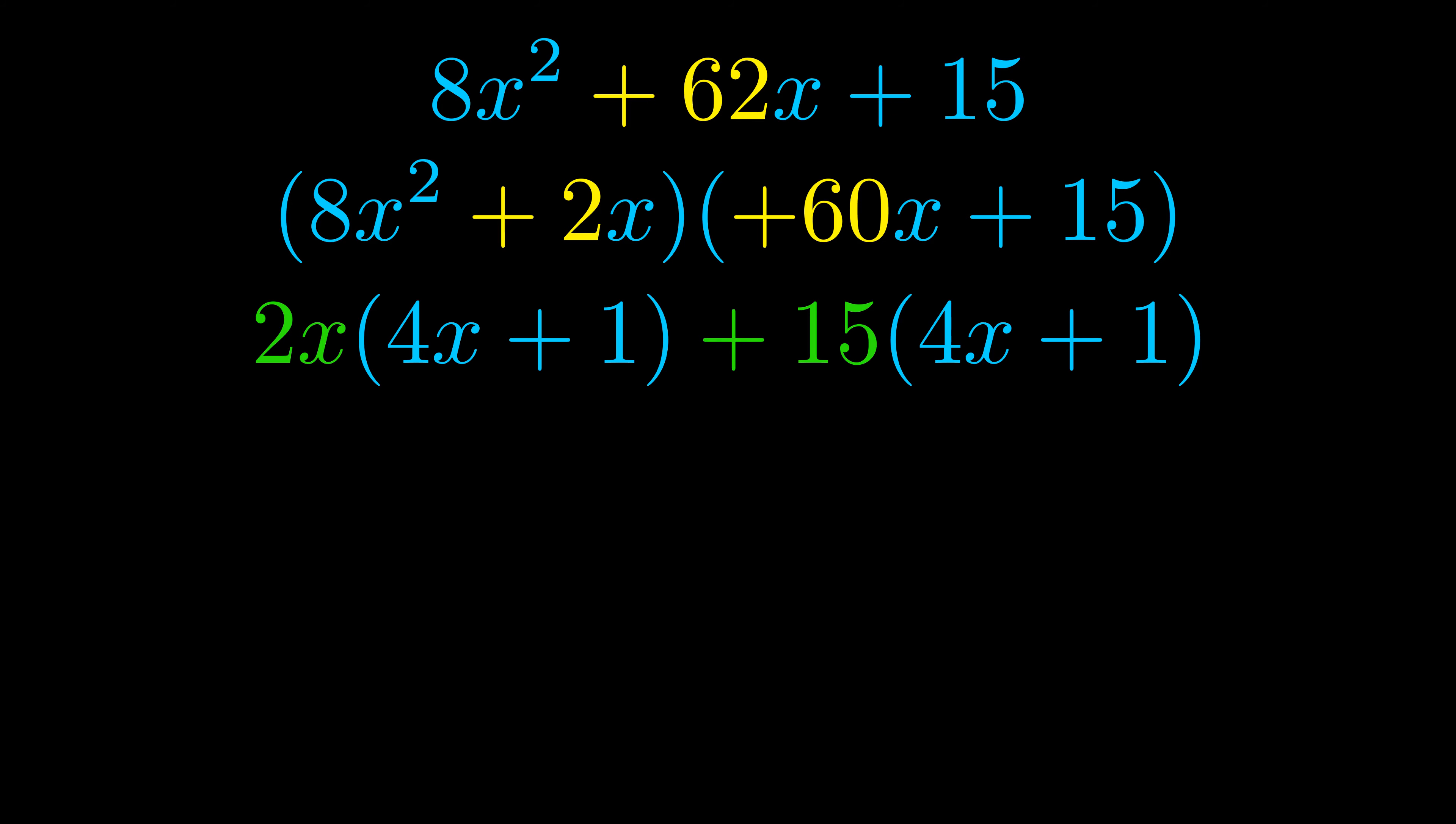Notice also how what remains inside of the parentheses is the same in both cases. The blue values are the same. Those blue values will become one of our factors and we will combine the two green values, the GCFs that we pulled out, to get the other one.